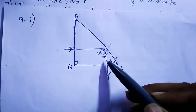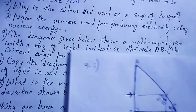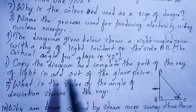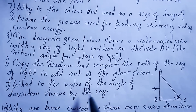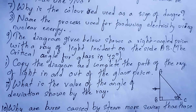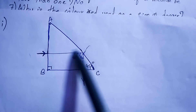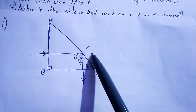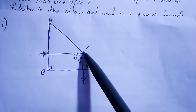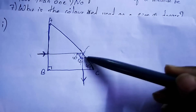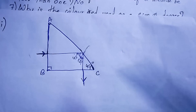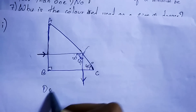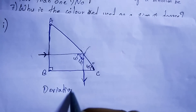Sub-part of question nine: what is the value of the angle of deviation shown by the ray? The deviation is the bending of light — since the light strikes and bends in the downward direction, the deviation is 45 + 45 = 90 degrees. So the angle of deviation is 90 degrees.